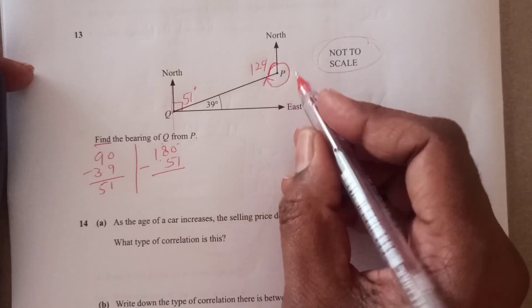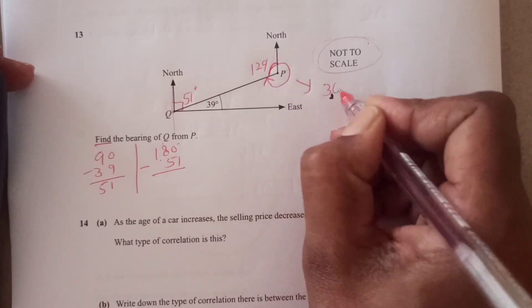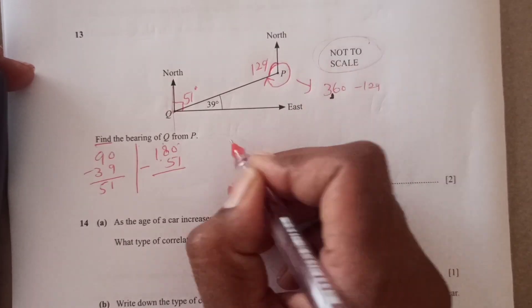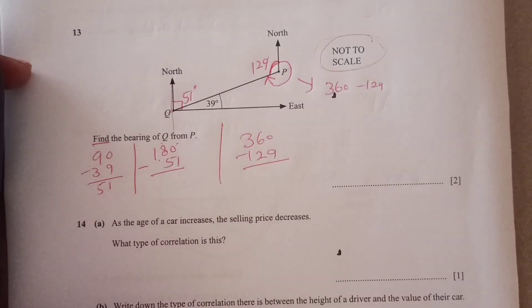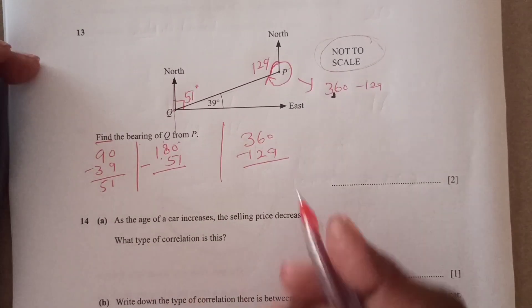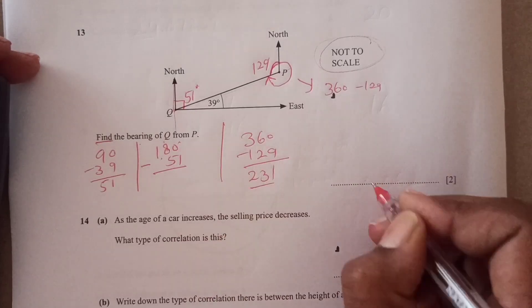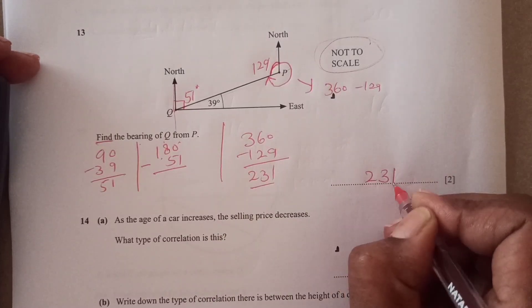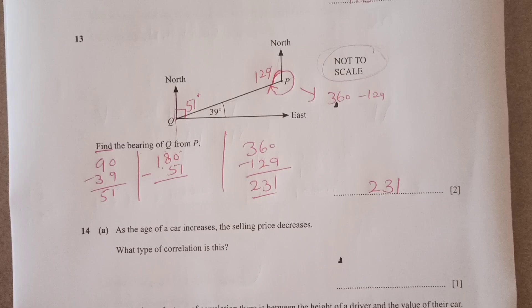Now we are looking for this one. This one is going to be 360 minus 129. So 360 minus 300, so this is 231. So final answer is 231 for this, right?